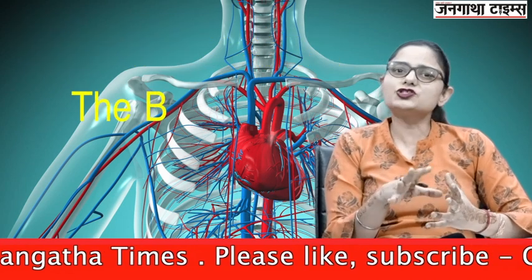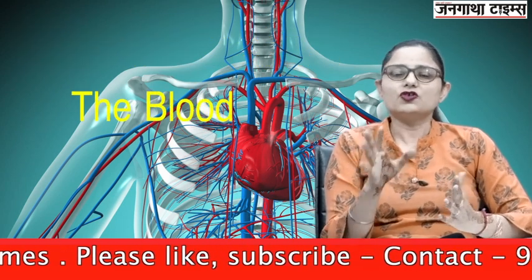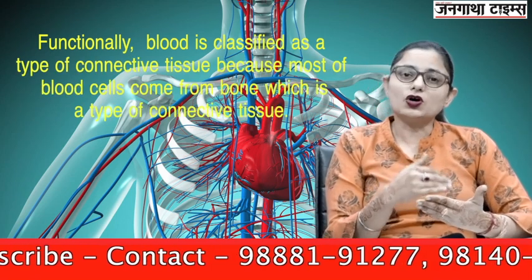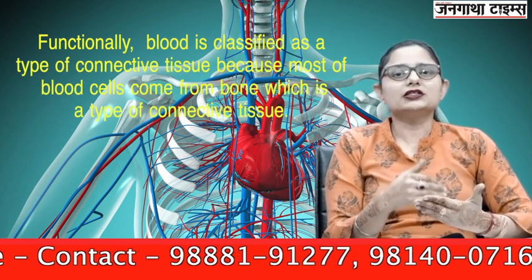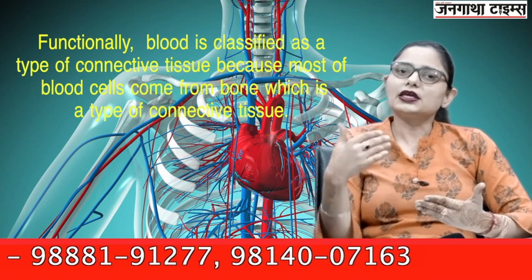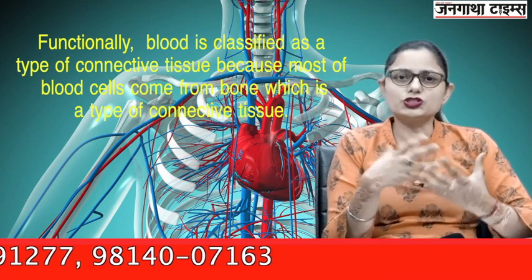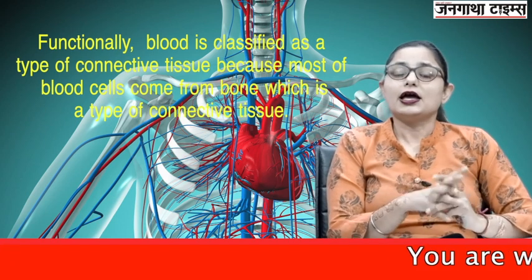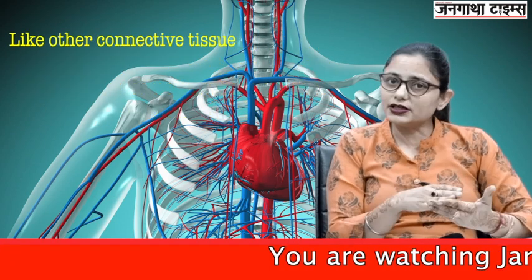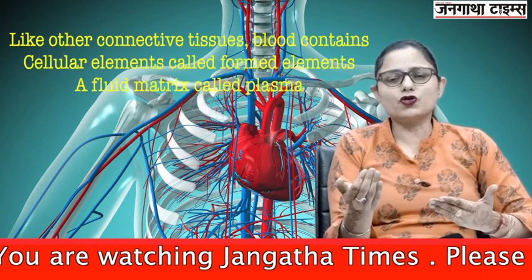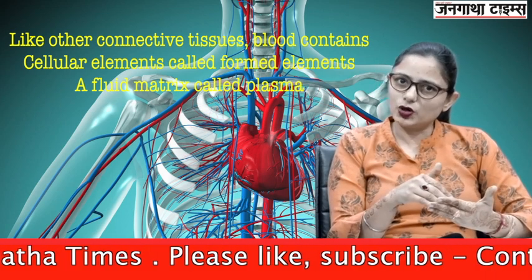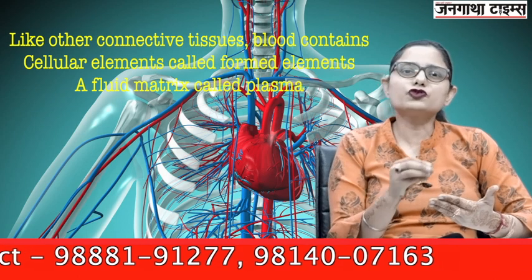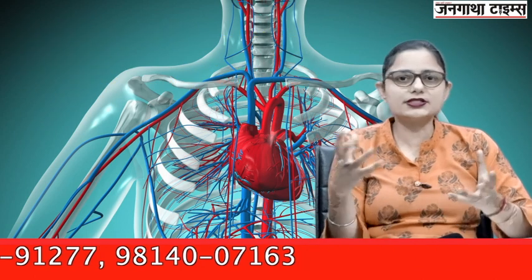First we will take up the chapter on blood. Functionally, blood is classified as connective tissue because most of the blood cells are formed from the bone cells, which are themselves connective tissue. Like other connective tissue, blood is also formed of a cellular component — the formed elements of the blood — and the fluid matrix, which is the plasma.